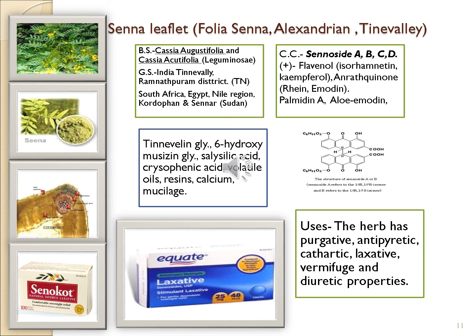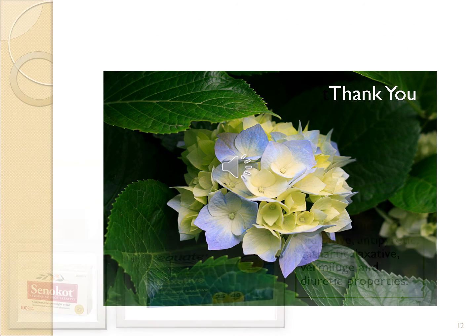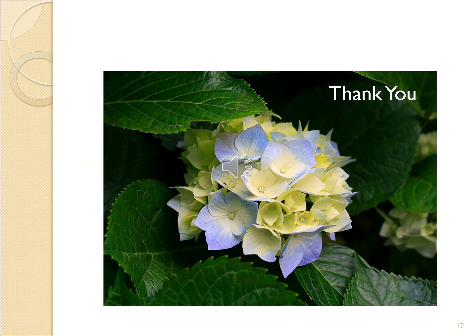The uses of senna include: mainly this herb is used as a purgative, antipyretic, cathartic, and laxative. It is also used as a vermifuge and has diuretic properties. Thank you very much for patient listening.